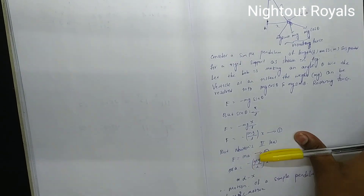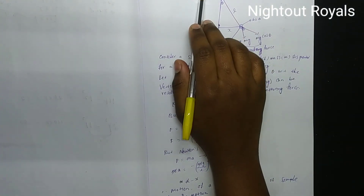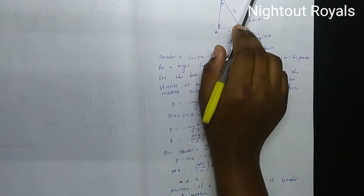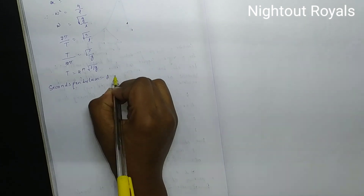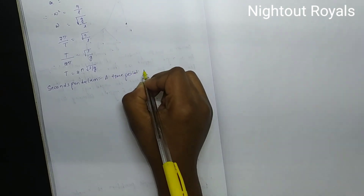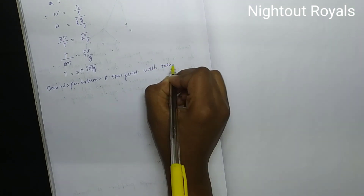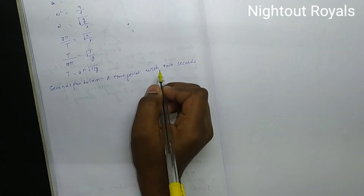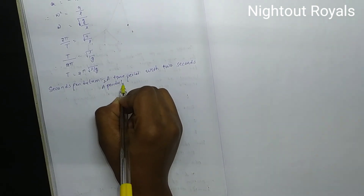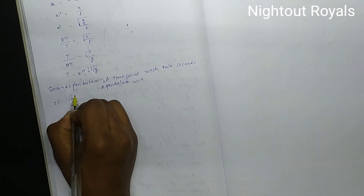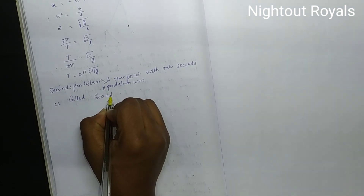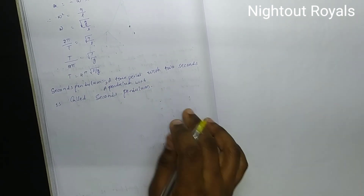Next, the time period formula of simple pendulum is T equals 2 pi root of L by g. What is a seconds pendulum? A pendulum with a time period of 2 seconds is called a seconds pendulum. So this is the problem for today.